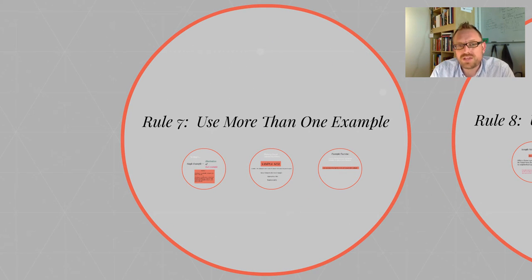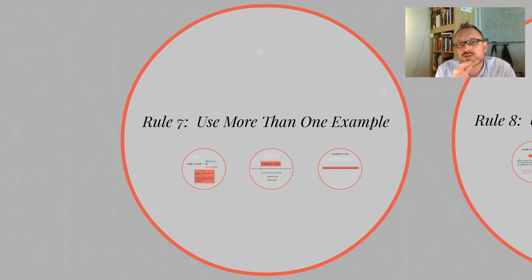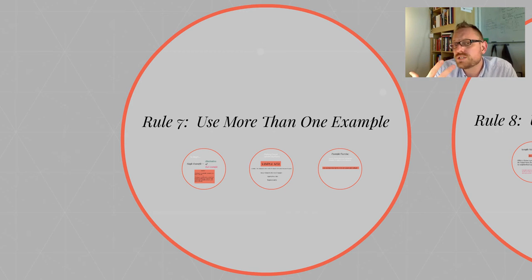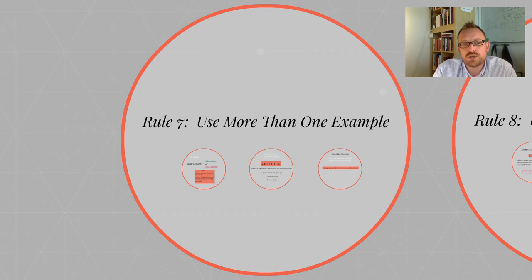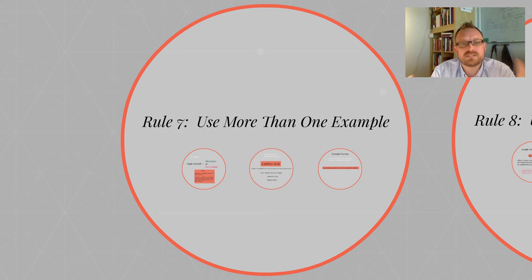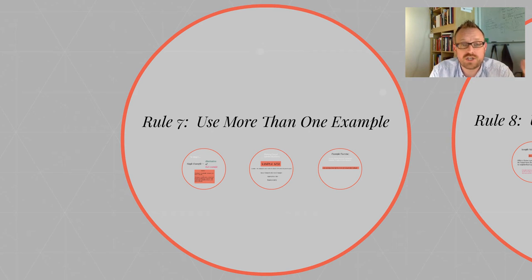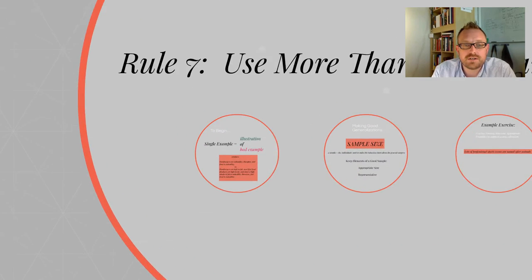So that's what a generalization is. Let's jump into rule seven. We're going to introduce five sets of rules over the next five videos that are related to generalizations. Rule seven is that you need to use more than one example. When you're making a generalization, you should use multiple examples. And when you're critiquing, assessing, or analyzing someone else's generalized argument, you should look to see how many examples they're using.